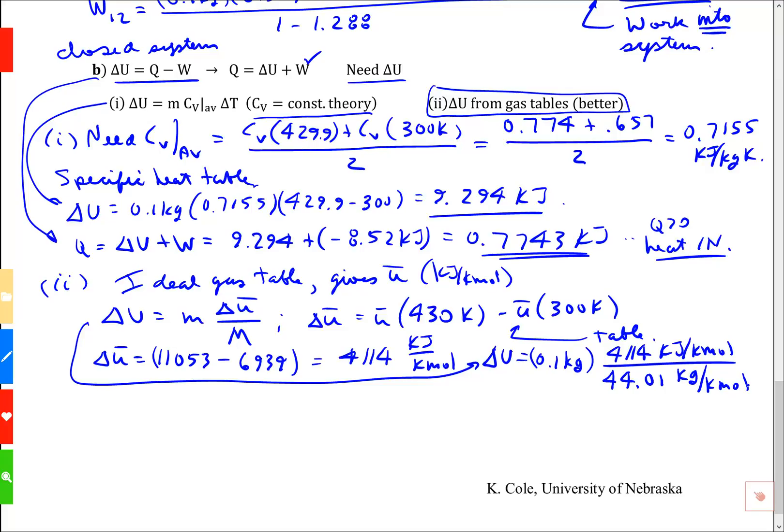The units are kilojoules per kilomole. Kilomoles go out, kilograms go out, leaving me kilojoules. Delta u for this calculation is 9.348. That's different than before.